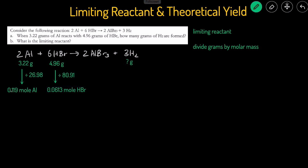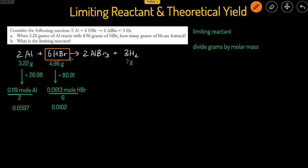We get 0.119 moles of aluminum and 0.0613 moles of HBr. Then we divide the moles by the coefficient from the balanced chemical equation to put both reactants on a level playing field. We divide aluminum's moles by 2 and HBr's moles by 6, giving us 0.0597 for aluminum and 0.0102 for HBr. The smaller number is the limiting reactant — 0.0102 is smaller, so HBr is the limiting reactant.